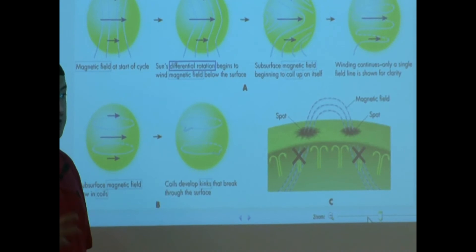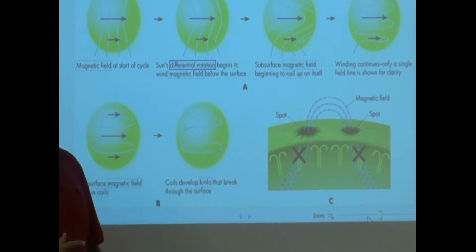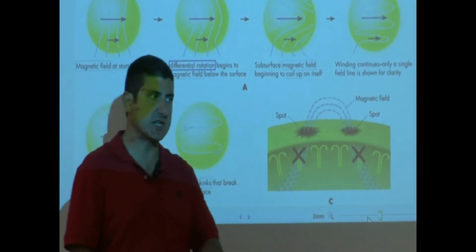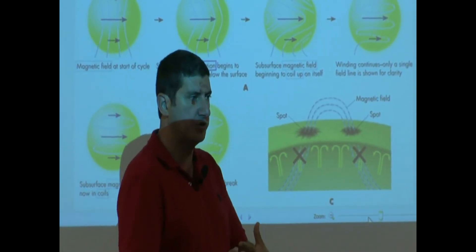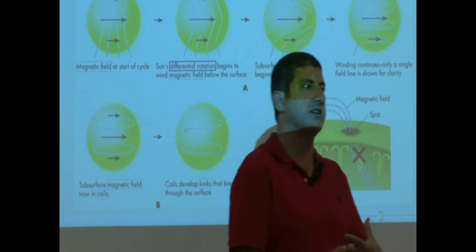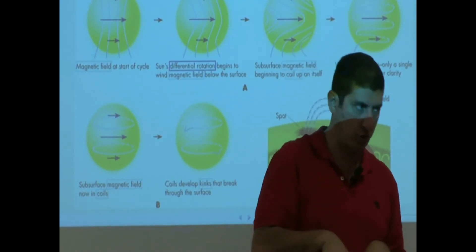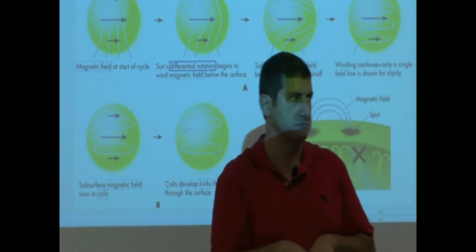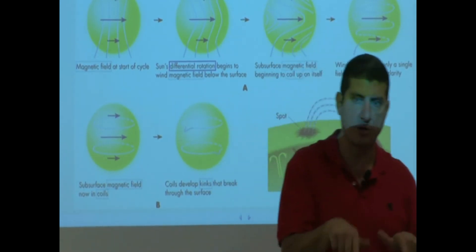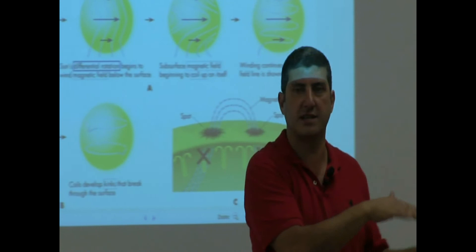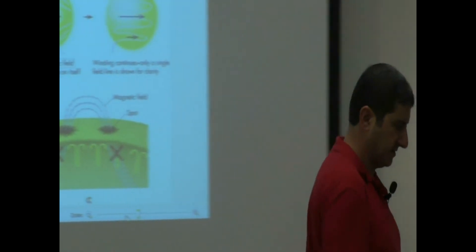A lot of those kinks are going to happen. But eventually, as this winding continues, it's going to start getting uncoiled. And when it gets uncoiled, the sunspots get less and less. So that's basically the structure of the Babcock model.